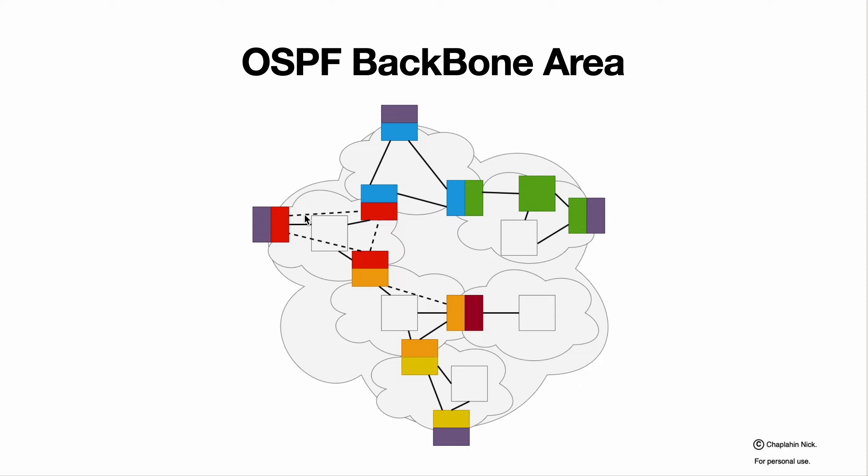Sometimes it could be done using virtual links, but in cases where virtual links for any reason cannot be used, we just add another internal router that executes this function so it connects multiple devices within backbone area.